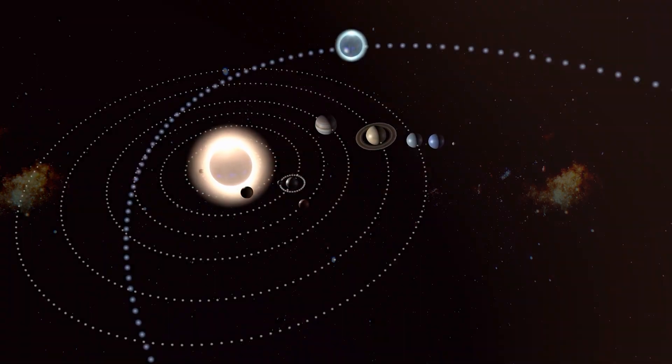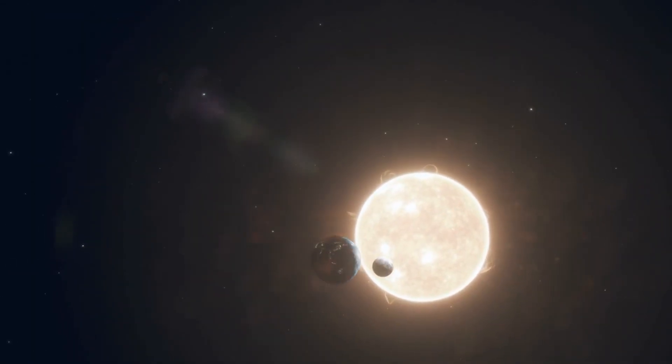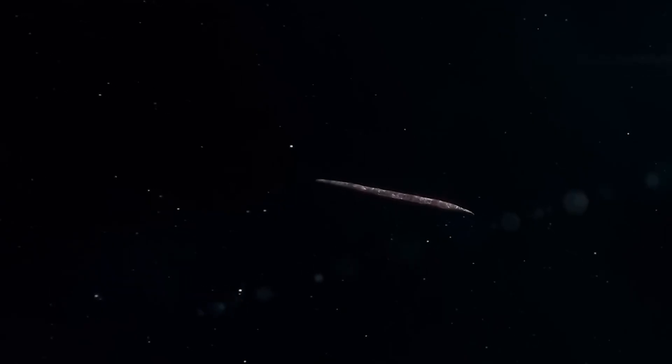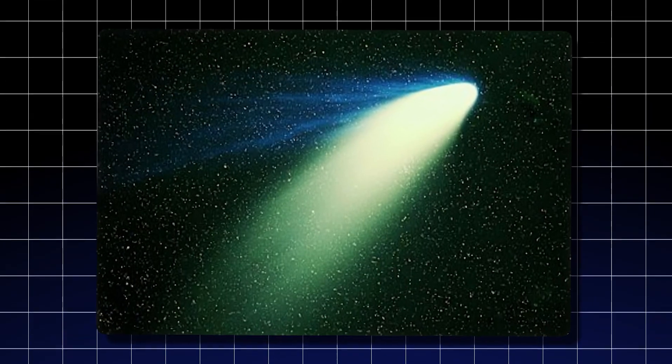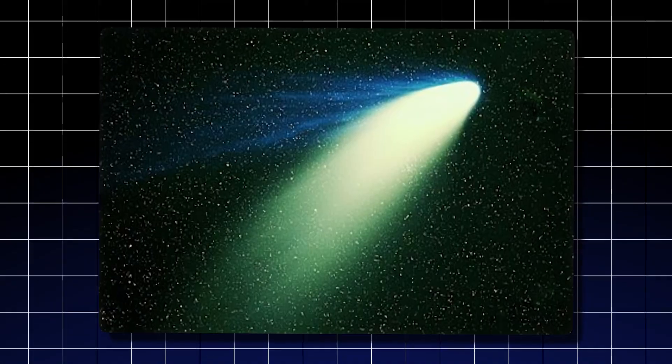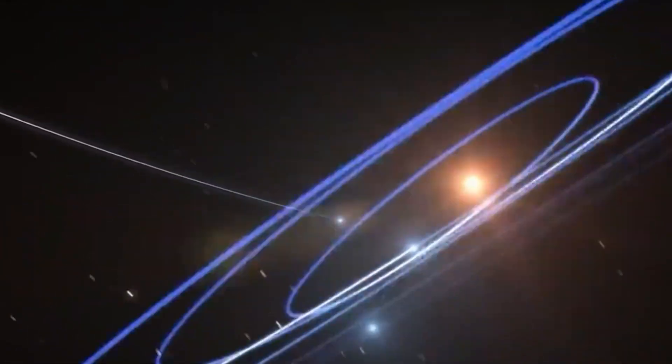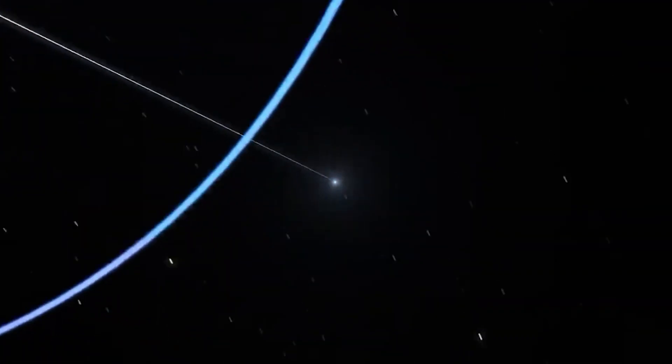The object itself is already fascinating. As the third confirmed interstellar body to traverse our solar system, following Oumuamua and 2i Borisov, 3i Atlas carries in its orbit the heritage of a far-flung cosmic journey. It plunges into our system with exceptional speed, nearly 58 kilometers per second relative to the sun, and with a hyperbolic trajectory that ensures it is not gravitationally bound here.